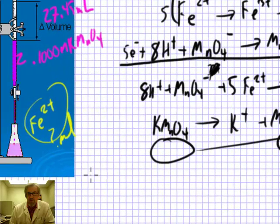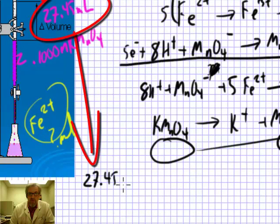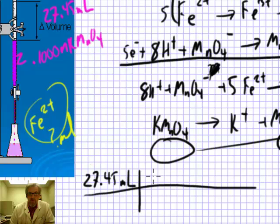Starting out with my volume, just like I did in the last titration calculation, 27.45 milliliters, the next thing I'm going to do is multiply by the molarity of my solution. 0.1000 moles of MnO4- solution are in every liter, and that's 1,000 milliliters.